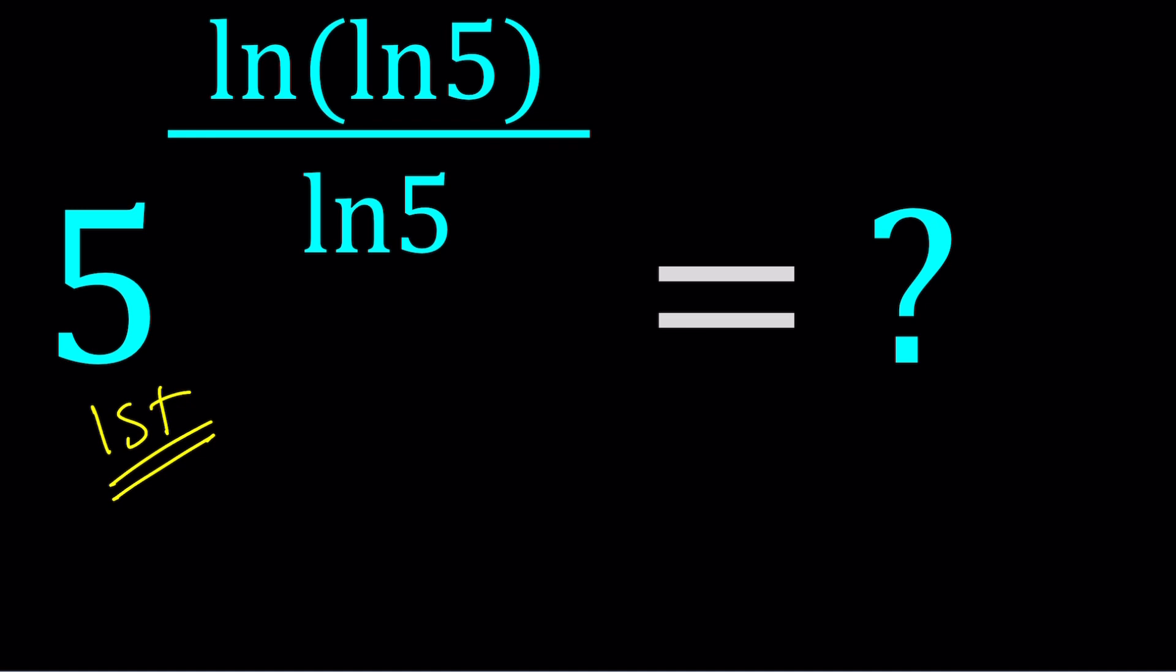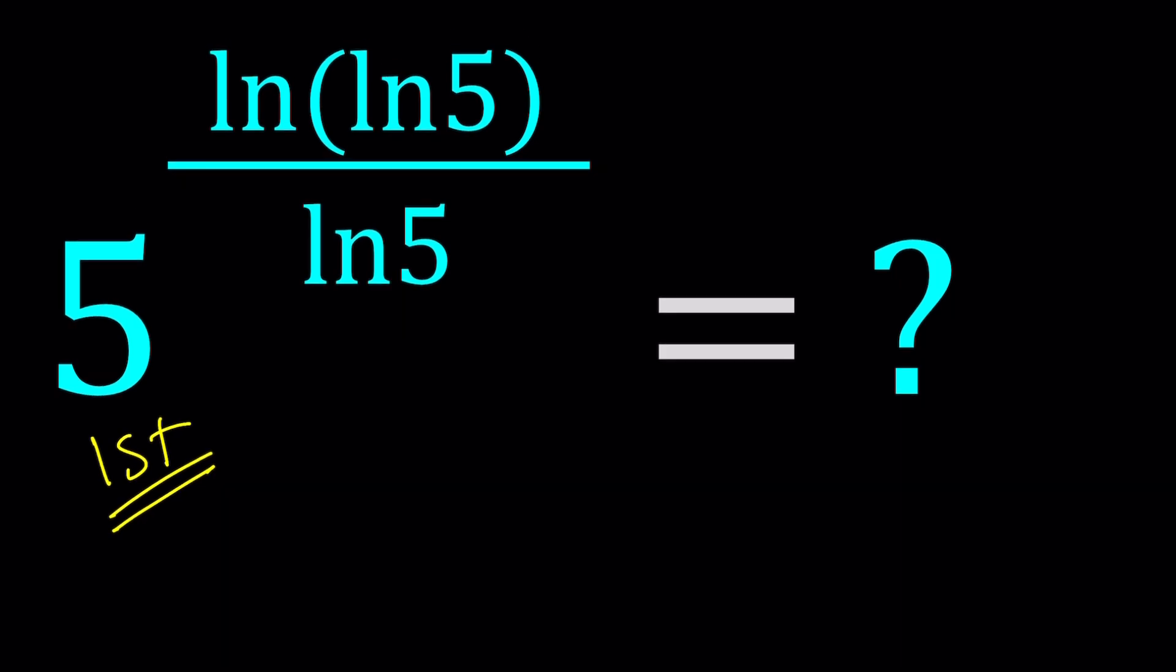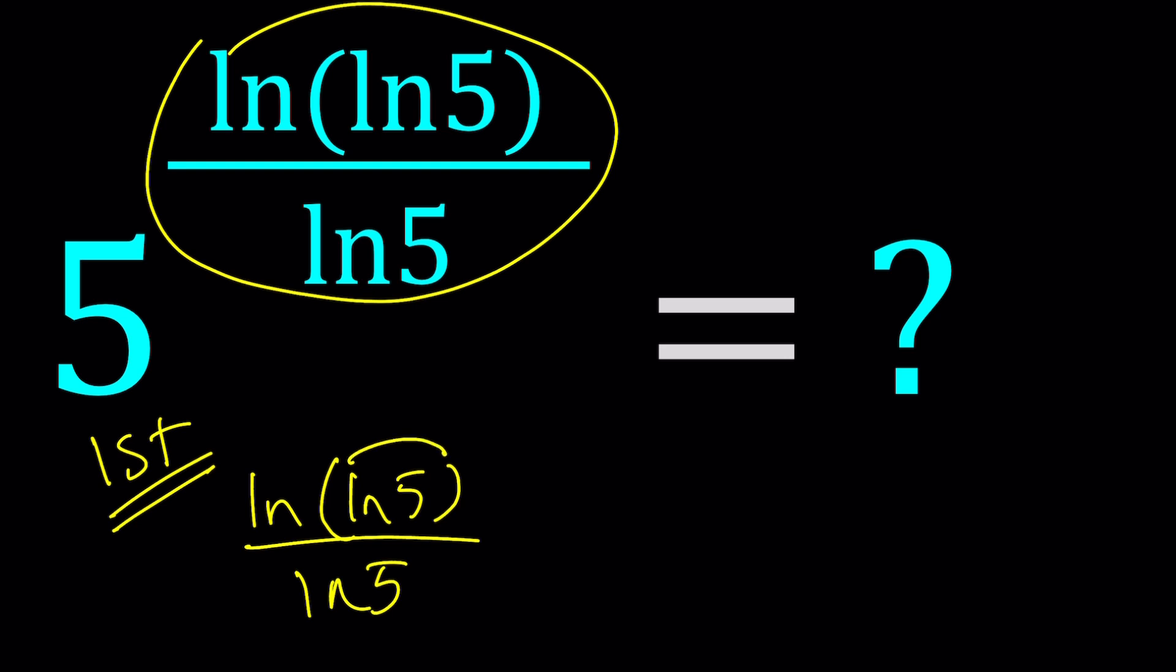For my first method, I'd like to focus on the exponent first. We have ln(ln5) over ln5. It's kind of like a quotient of ln. In other words, if you call this b and if you call that a, it's ln b over ln a. And what is that equal to? Good question.